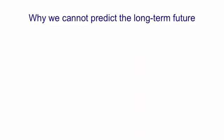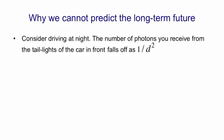I'm going to try and explain why we can't predict the long-term future by using an analogy. Imagine you're driving a car at night, and you're looking at the taillights of the car in front. The number of photons that you receive from the taillights of the car in front falls off as 1 over d squared, where d is the distance to the car in front.